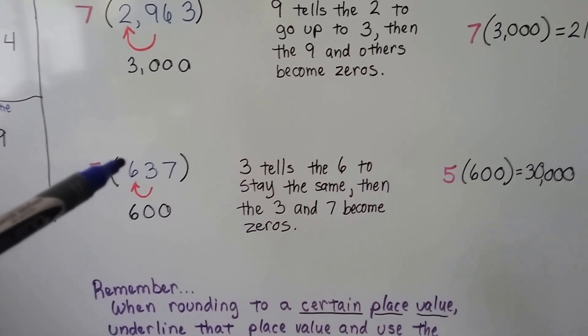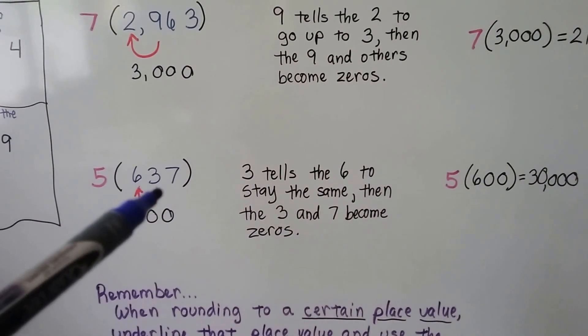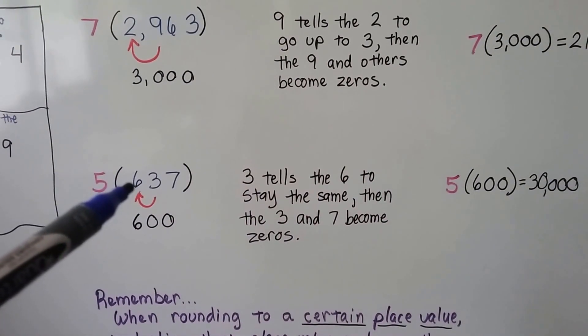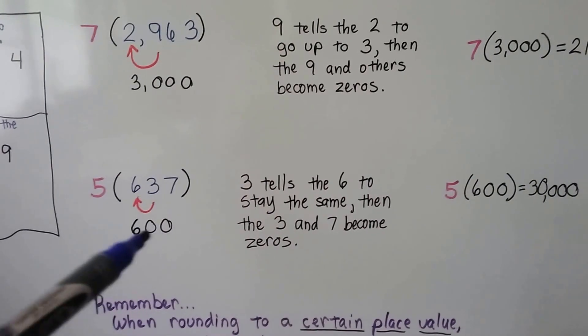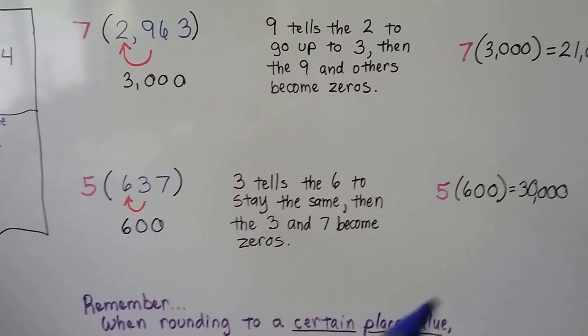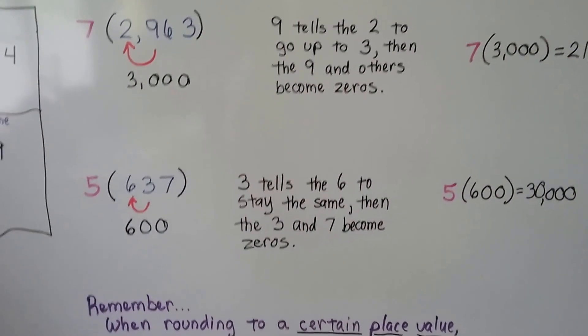Now we've got 5 times 637. This 3 is going to tell this 6 to stay the same. So it becomes 600. The 3 and the 7 become zeros. And we've got 5 times 600, which is 3,000.